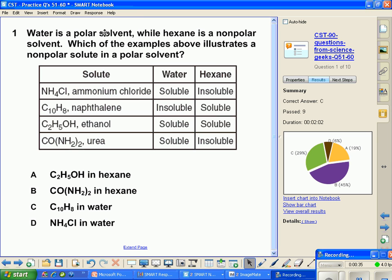Up here where it says you want to find a nonpolar solute in a polar solvent, nonpolar will not dissolve in polar. So water being polar, naphthalene is the dude that is not going to dissolve in a polar solvent because he is nonpolar. That's why letter C is the correct answer.